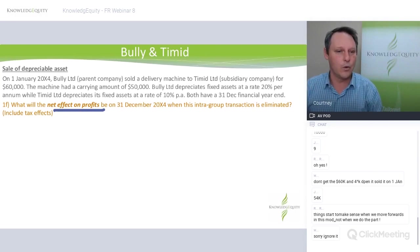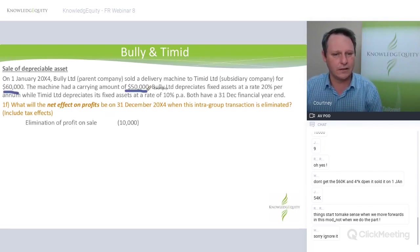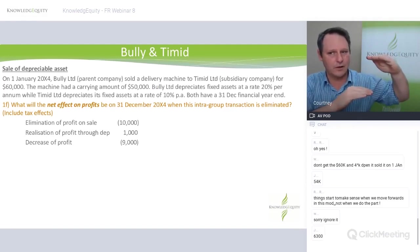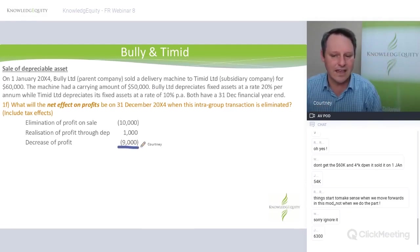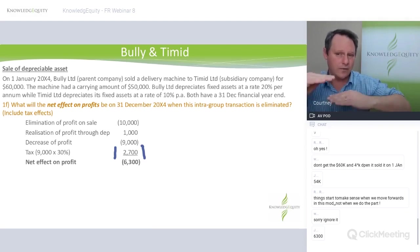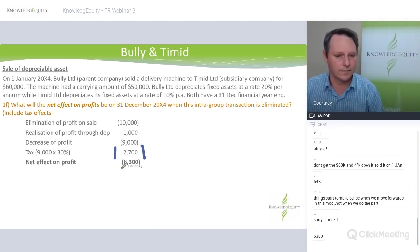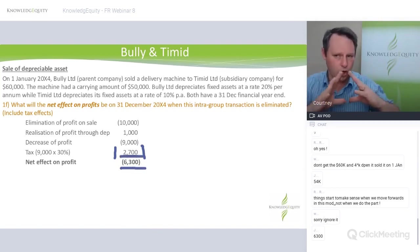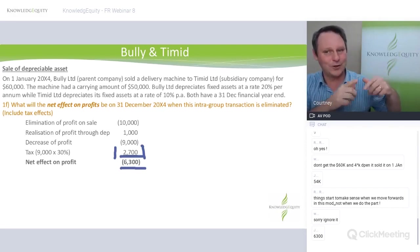With tax included: $10,000 profit on sale, dropping by $1,000 from the depreciation difference, gives $9,000 unrealized. Tax of $2,700. The net effect on profit is $6,300. The parent pays $3,000 more tax; the subsidiary pays $300 less because its depreciation is $1,000 higher, pushing down taxable profit. Net amount: $2,700 deferred tax asset.